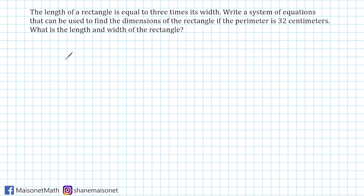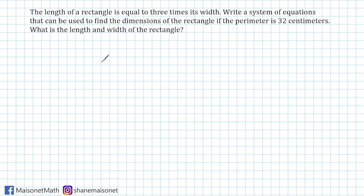This problem reads that the length of a rectangle is equal to three times its width. Write a system of equations that can be used to find the dimensions of the rectangle if the perimeter is 32 centimeters, and then we have to figure out the length and the width of that rectangle.